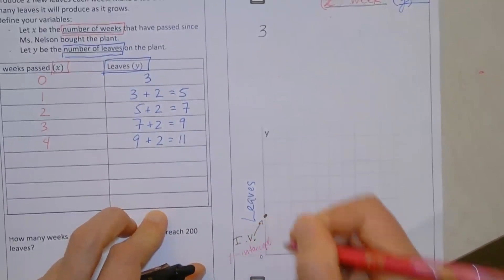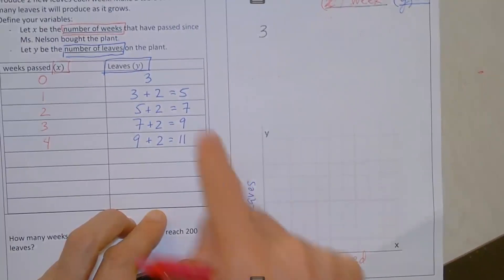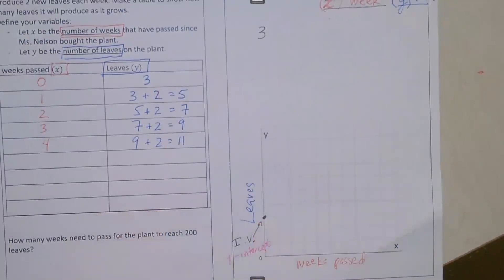The initial value is also the Y intercept. So these mean the same thing. Our initial value and our Y intercept, which is three, Y equals three. Let's plot the other points.